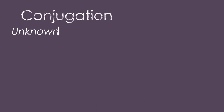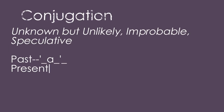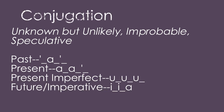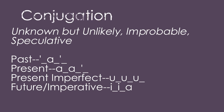The last mood is unknown and unlikely, or improbable, or speculative. In the past, that is sh-rash — which is hard to say. The present is arash-s. The present imperfect is urshus. And the future or the imperative in this mood is irishas.